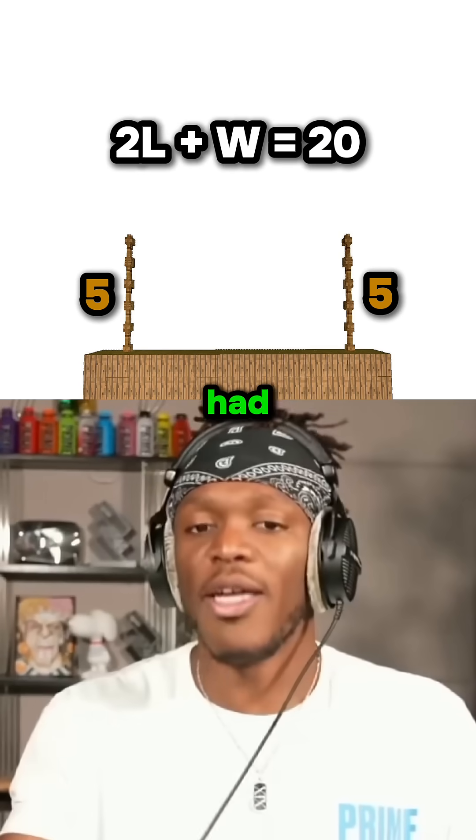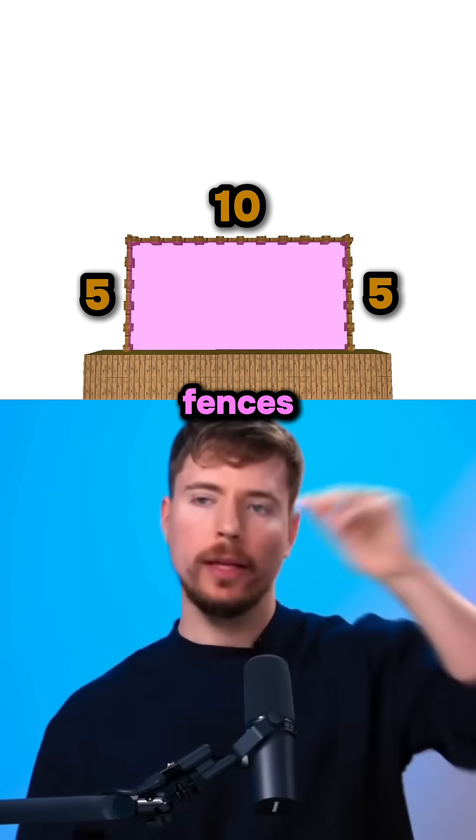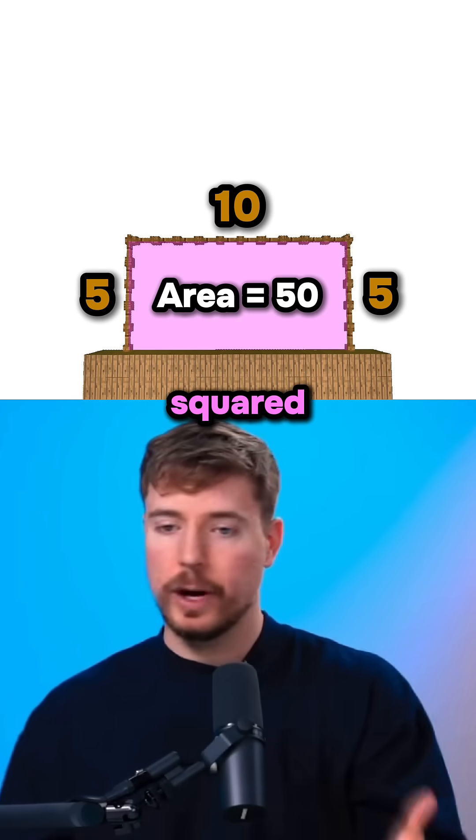So you get the biggest area when L is 5. Five fences. And remember, we had exactly 20 fences. So this width is going to be 10 of them. Okay, so the biggest space we can build is 5 fences by 10, and it's 50 fences squared in area.